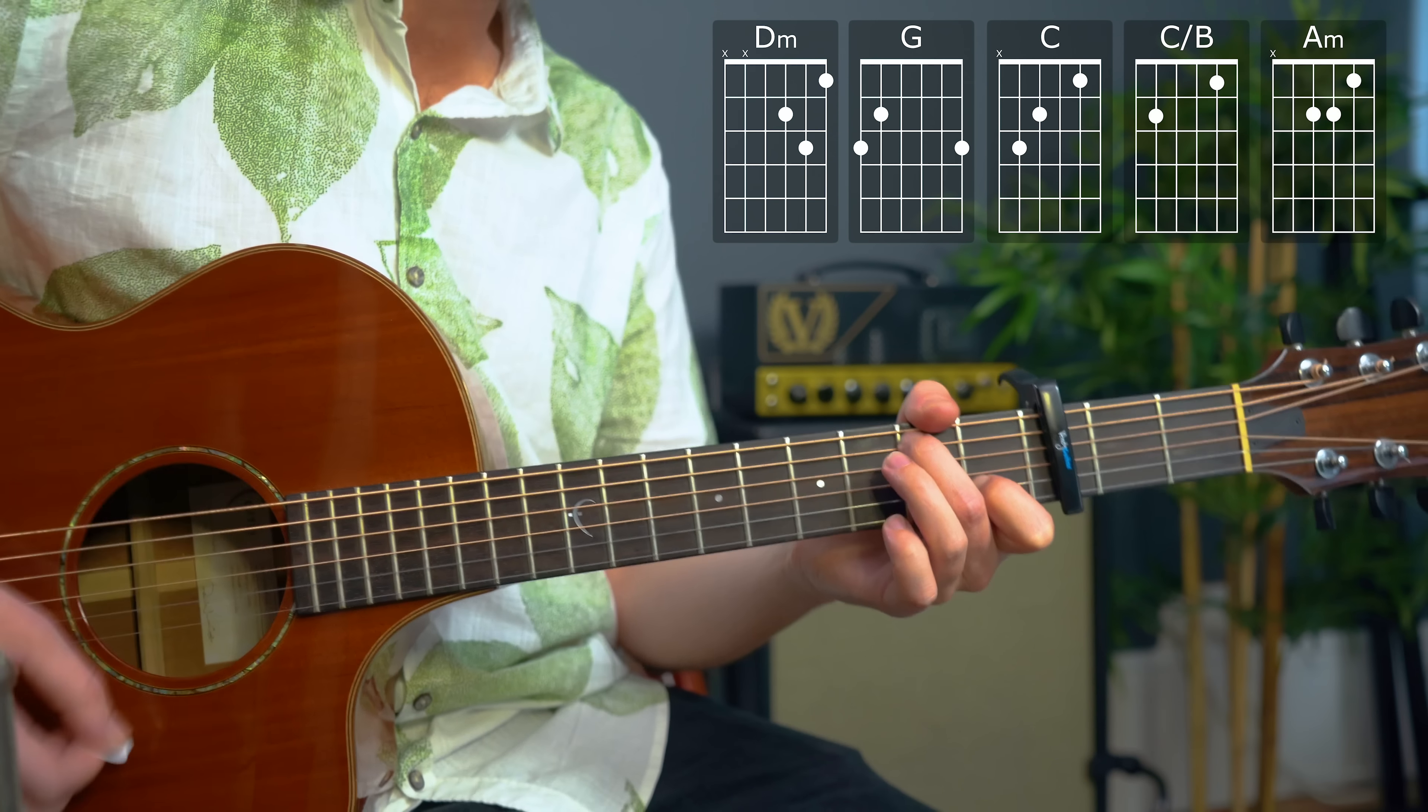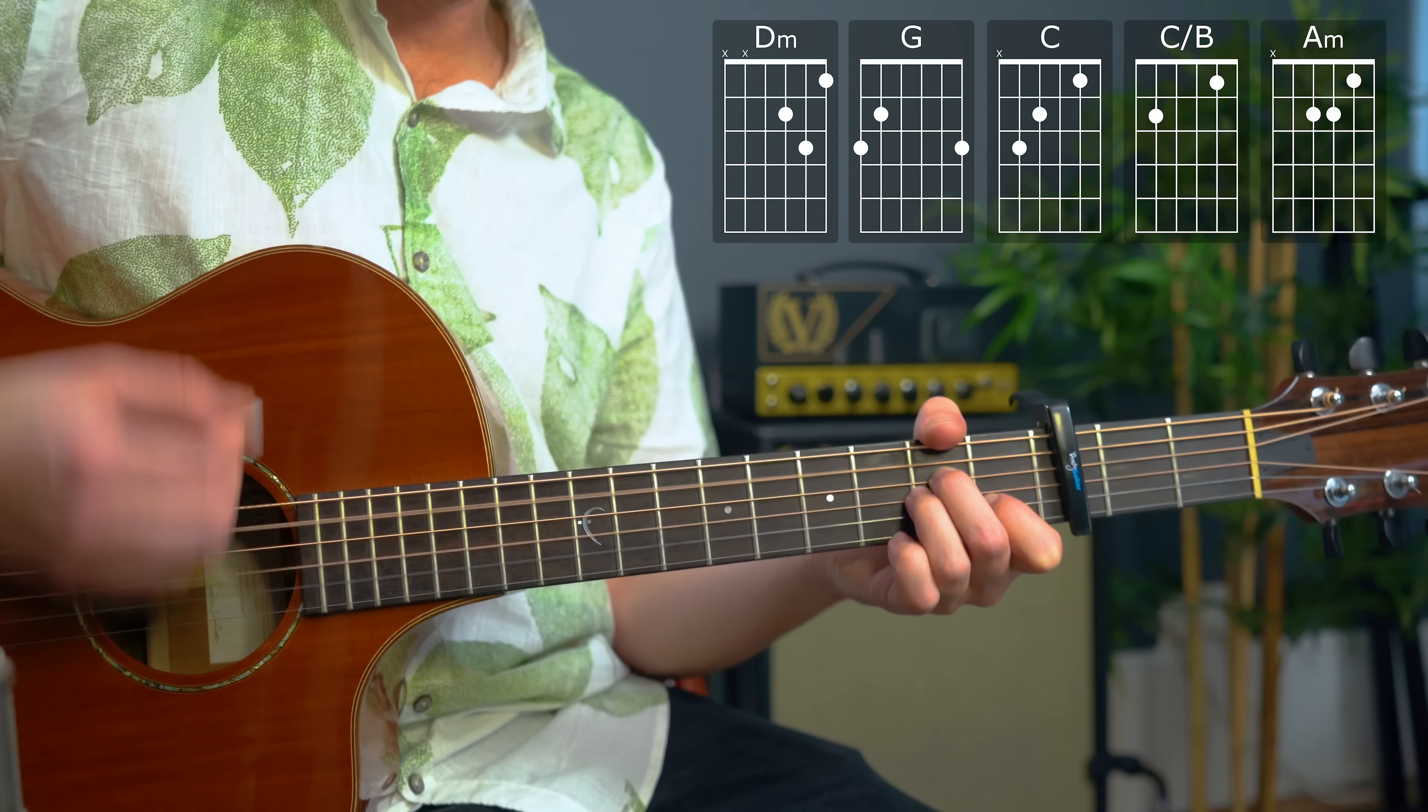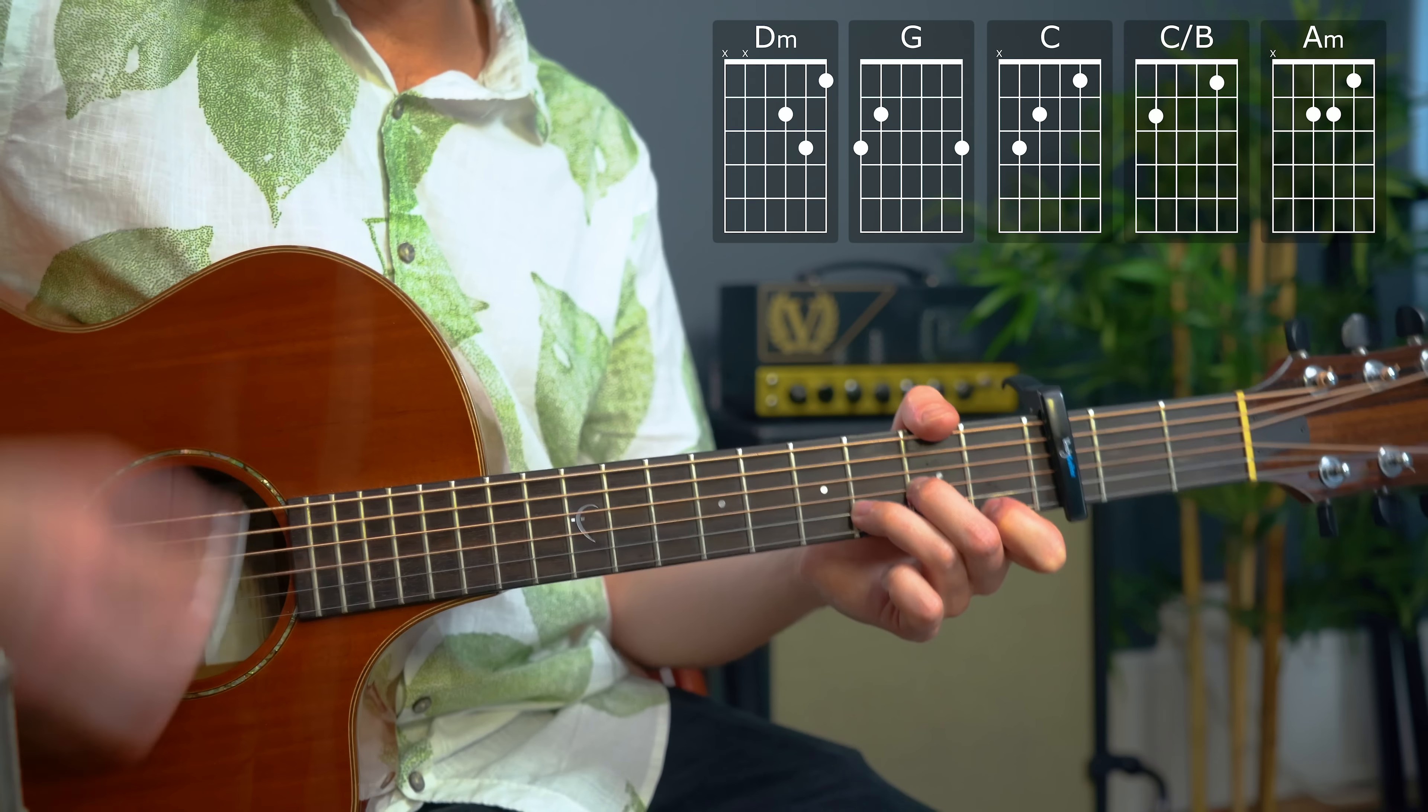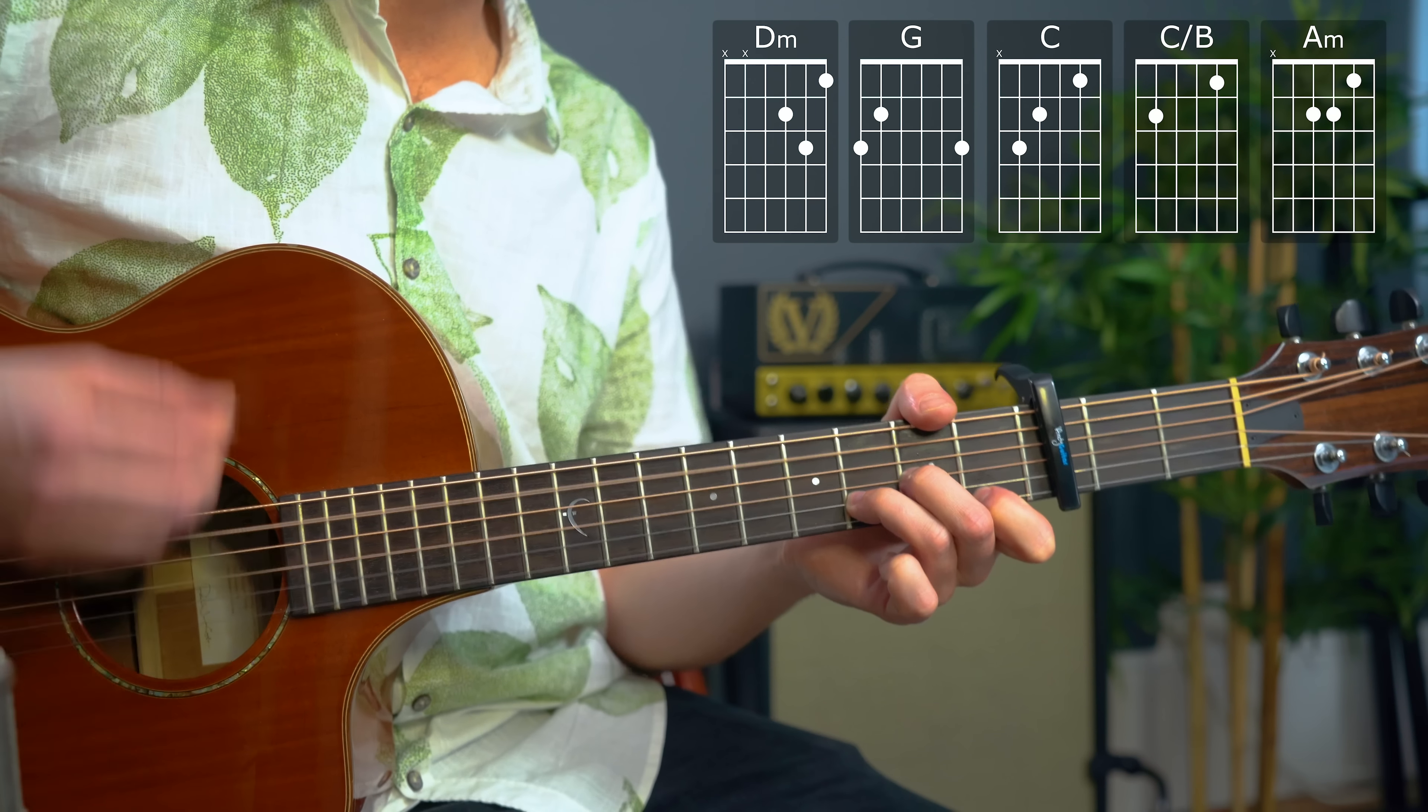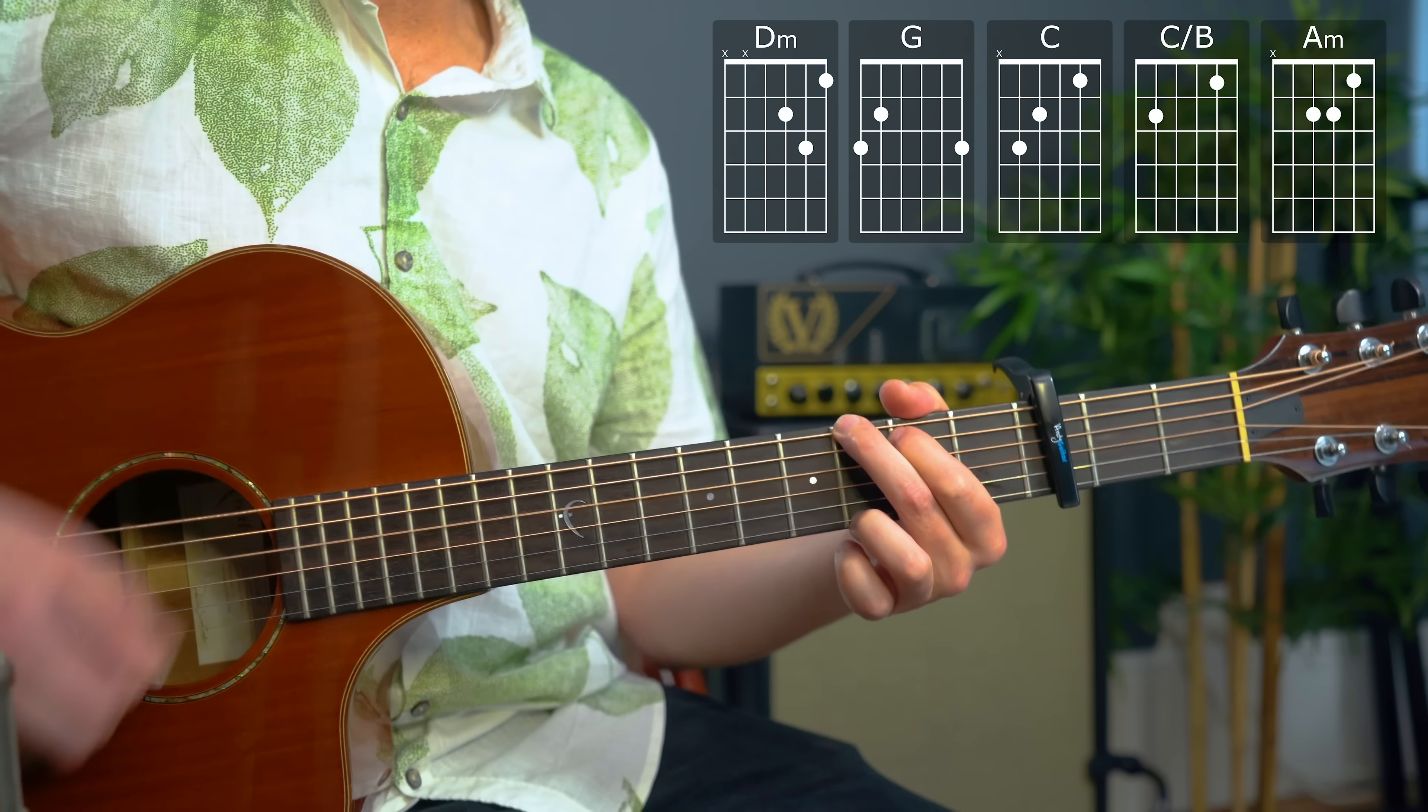[demonstrates strumming] And remembering that on that last up, down, down, down, up, down, up, it's best to actually fully lift off of this D minor chord and the G and the other chords as well to make the change. Down, down, down, up, down, up, down, lift. That's the trick to this kind of thing.